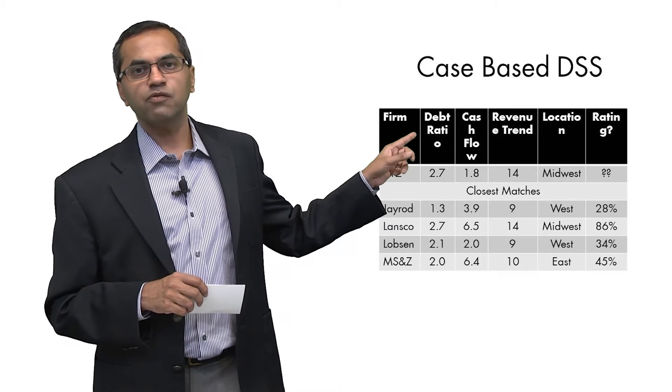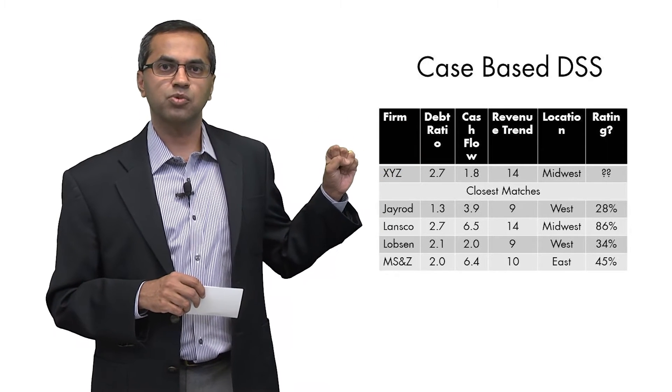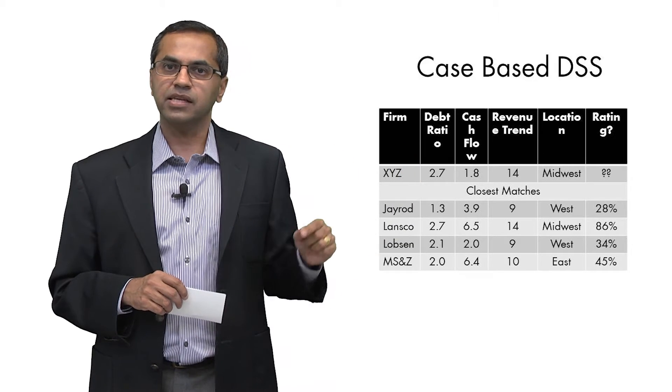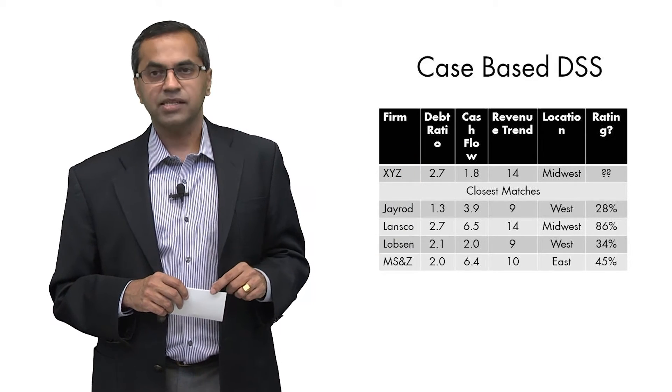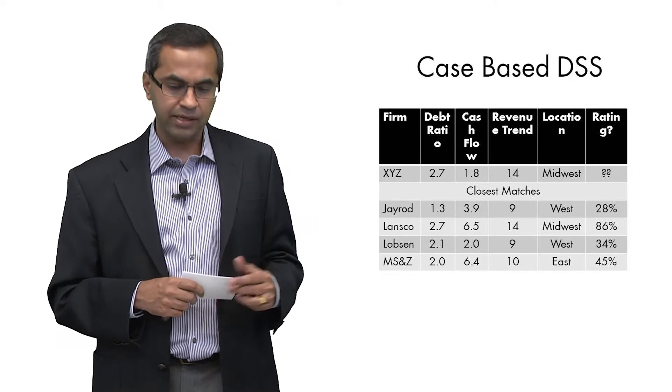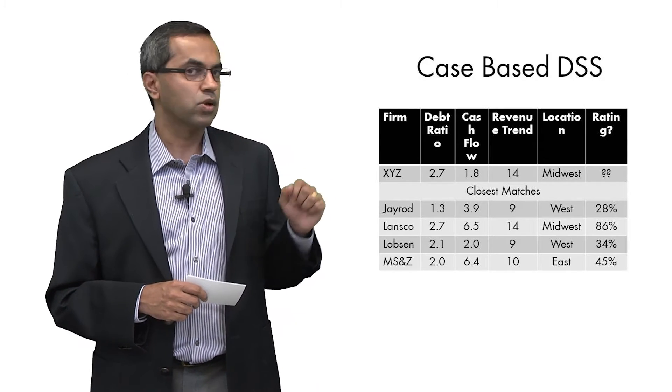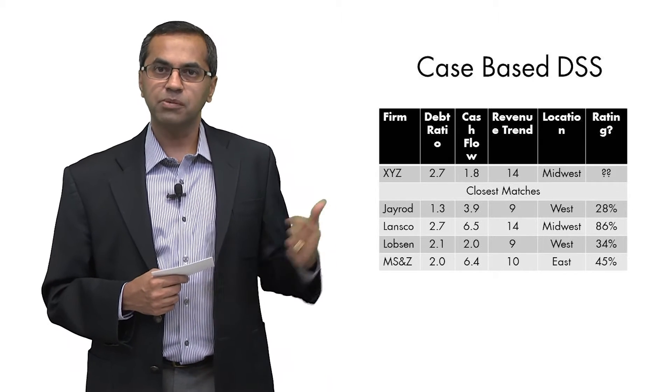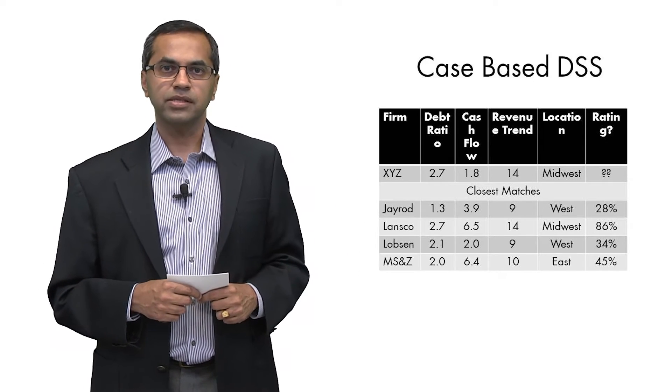Here's what an interface for a case-based decision support system might look like. What you see on the top is a new applicant, let's say company XYZ that has a debt ratio of 2.7, cash flow of 1.8, revenue trend of 14 and is located in the American Midwest. And you need to make a judgment about what their credit rating is going to be.